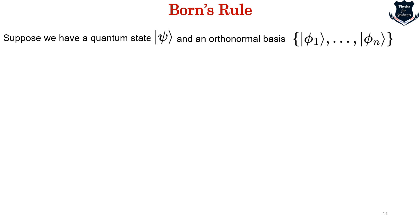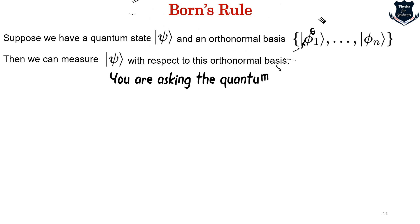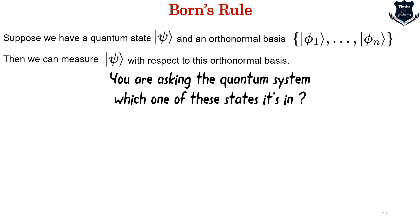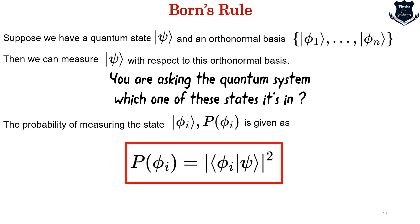Given a quantum state psi and an orthonormal basis spanning phi 1 to phi n, when we measure psi with respect to this orthonormal basis we are asking: which one of the basis states is the system in? The probability of measuring state phi_i, denoted P(phi_i), is given by the modulus squared of the inner product. We find the probability of measuring the state by squaring the amplitude.